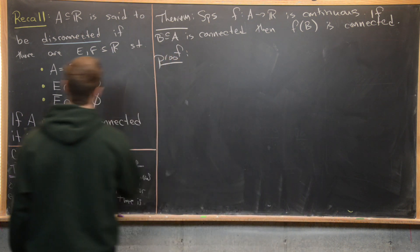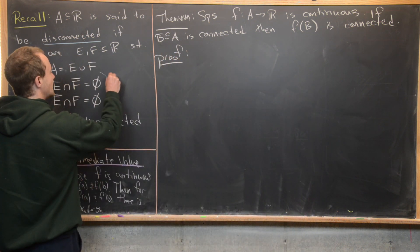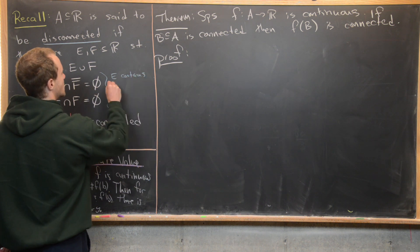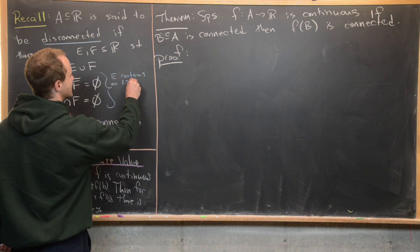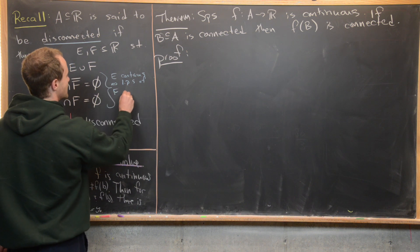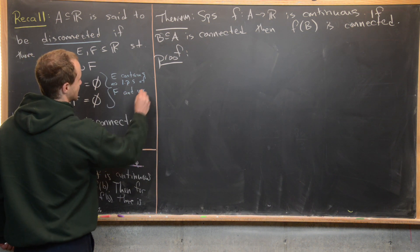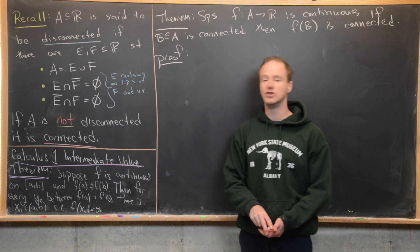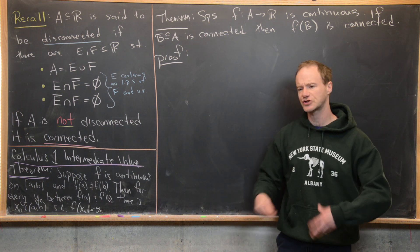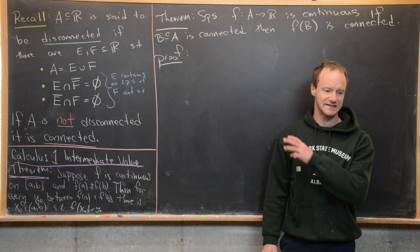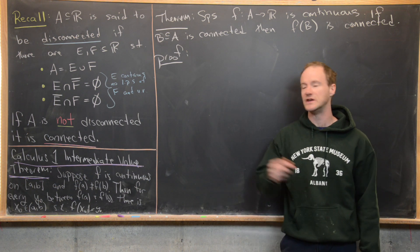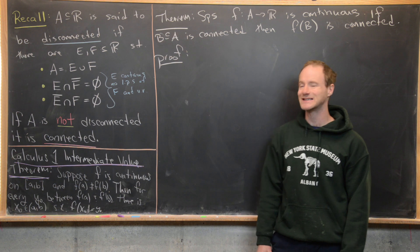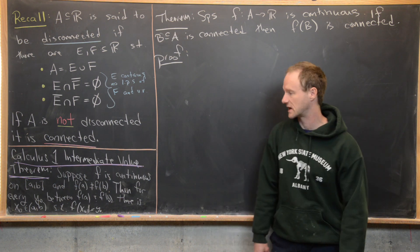In other words, E contains no limit points of F, and F contains no limit points of E. Recall that the closure of a set is the set union its limit points. Then A is connected if it is not disconnected.